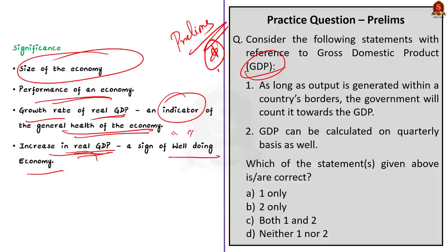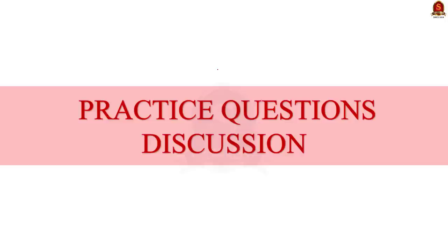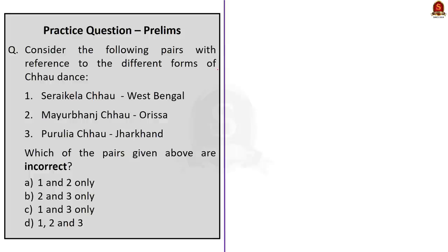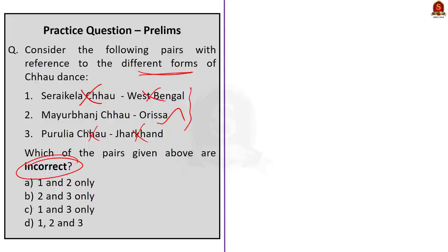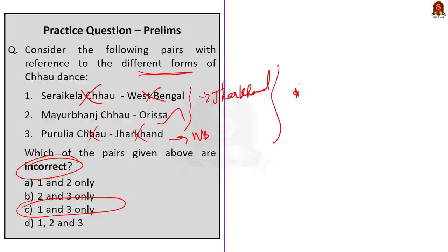The first question is about Chow dance, asking whether different dance forms are correctly matched with their regions. The first pair — Seraikala Chow, West Bengal — is incorrect. The second pair — Mayurbhanj Chow, Orissa — is correct. The third pair — Purulia Chow, Jharkhand — is also incorrect. The question demands incorrect pairs, so the answer is option C: 1 and 3 only. The correct pairs are: Seraikala Chow of Jharkhand, Mayurbhanj Chow of Orissa and Purulia Chow of West Bengal.